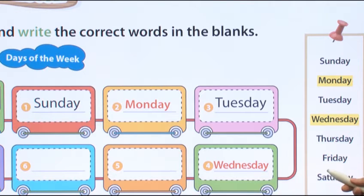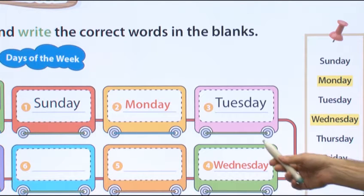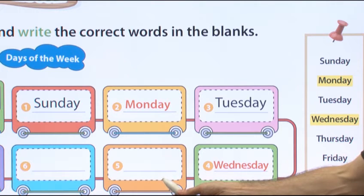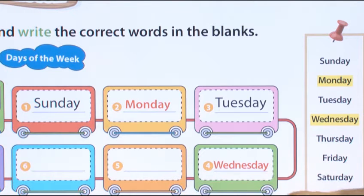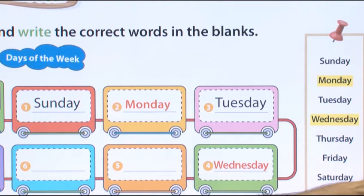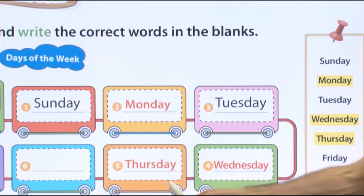Good. After Wednesday is Thursday. Where is Thursday? Be careful and write it here — number five. And the answer is Thursday. Wednesday. Thursday.